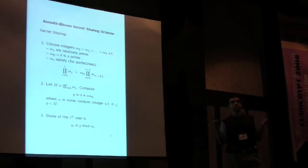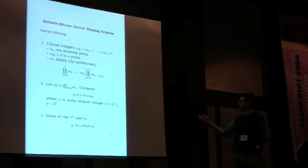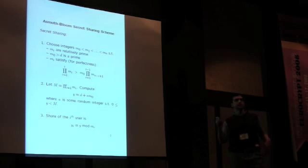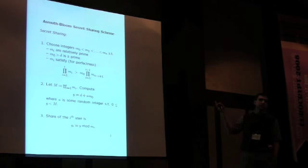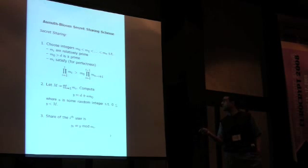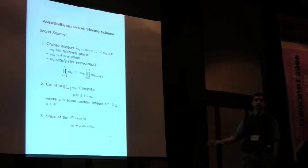So if enough people come together, they can reconstruct it using Chinese Remainder Theorem. So we use these moduli such that if T of them come together, then the combined modulus is large enough so that they can get the real number. But if T-1 or fewer of them come together, then the number is too small and they cannot get the real Y.